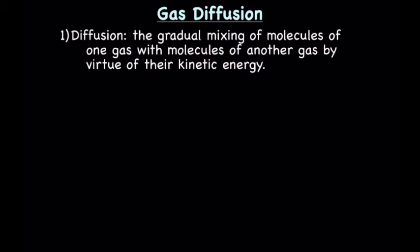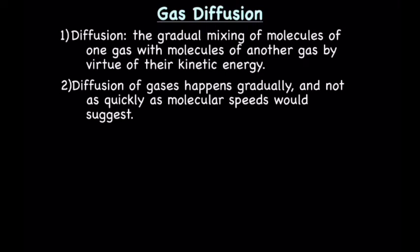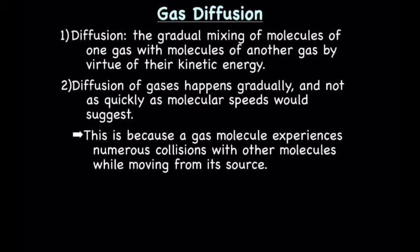Next on the to-do list is gas diffusion. What is diffusion? The definition of diffusion is the gradual mixing of molecules of one gas with molecules of another gas by virtue of their kinetic energy. Diffusion of gases actually happens fairly gradually, which seems strange because gas molecules actually move very quickly. It has to do with the fact that the gas molecules experience numerous collisions with other molecules while moving from its source.